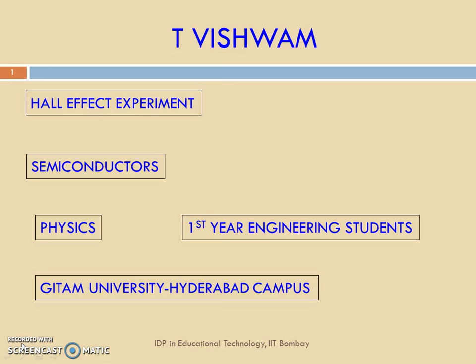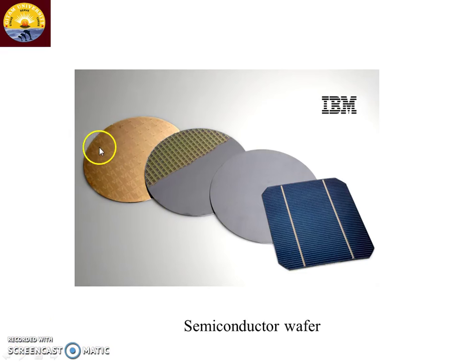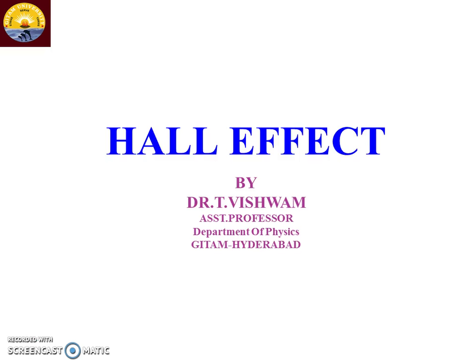In the last class we discussed about the making of N-type material or P-type material. In the case of N-type material, the majority carriers are electrons, whereas in the case of P-type material, the majority carriers are holes. Looking at this silicon semiconducting wafer, whether it is N-type or P-type, how many charge carriers are there and what about their mobility? To know all these parameters — N-type or P-type, the number of charge carriers and their mobility — we have to approach the Hall effect experiment. By using the Hall effect experiment, we can calculate the number of charge carriers and their mobility, and most importantly, we can determine whether it is N-type or P-type.